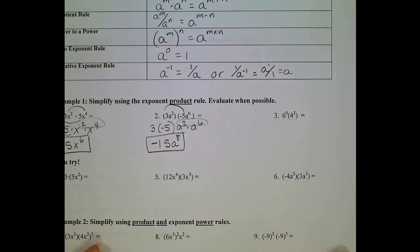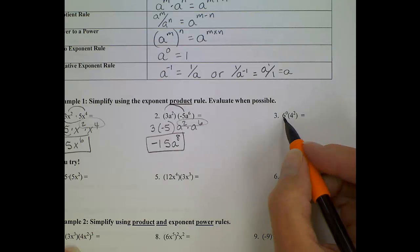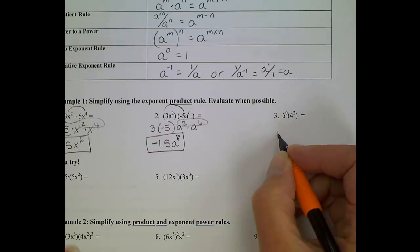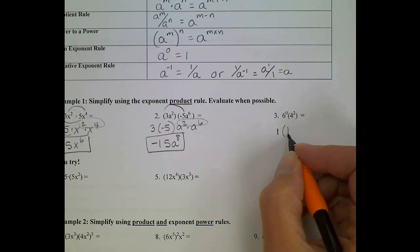All right, now number 3. I think I'm going to like this problem, no variables. 6 to the 0 power, when we evaluate that, we should get 1. And then 4 squared, when we evaluate that, that's just 4 times 4, and that's 16. And then we take that one step further, 1 times 16 is 16.